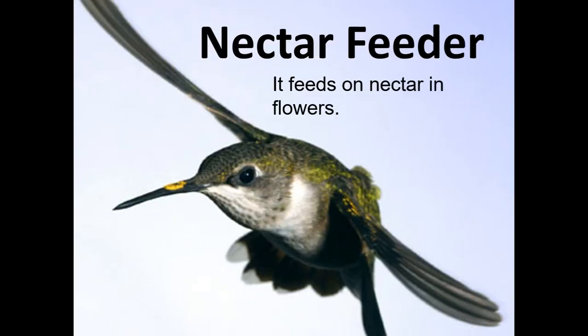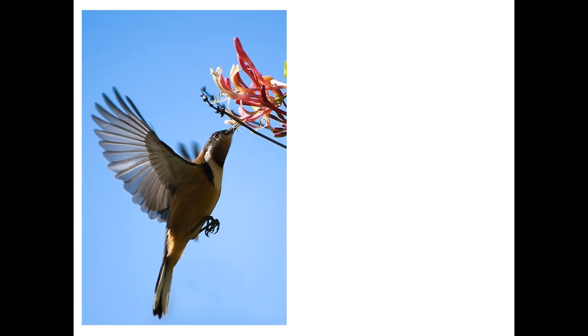Okay, the next one — a nectar feeder. It feeds on nectar and flowers, of course. To be able to feed on flower nectar, they have to have longer, thinner beaks, but you'll notice that some of them have different shapes. Here's one going up into a flower to get the nectar, which is way deep in the flower. It beats its wings and stands still in the air as it's beating its wings so that the beak can go into the flower and get the nectar.